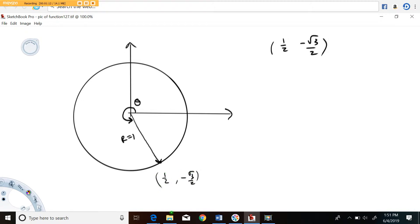And now we'll just start writing our trig functions. So sine theta is defined as y over r. Y is minus root three over two. The radius is one. So we just end up with minus root three over two.